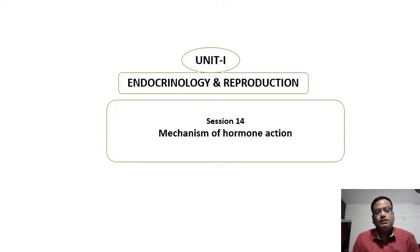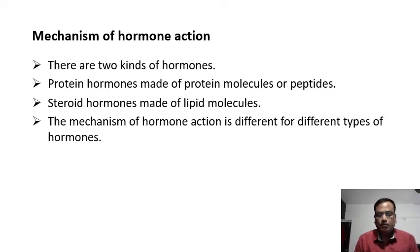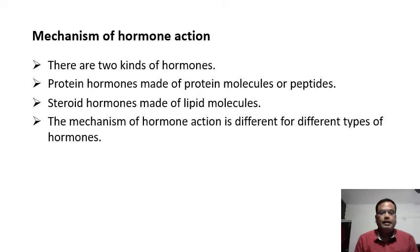In this session we are going to study the mechanism of hormone action. In previous sessions we already studied what hormones are, how they are produced, and the different types of hormones. Basically we can identify two types of hormones: hormones made up of protein, called protein hormones or peptide hormones, and steroid hormones, which are made up of lipid molecules.